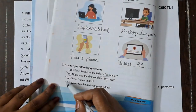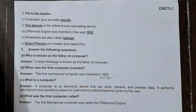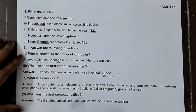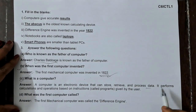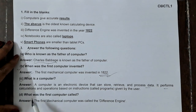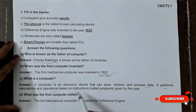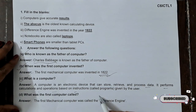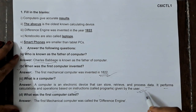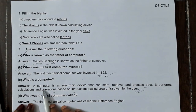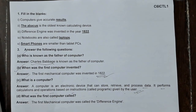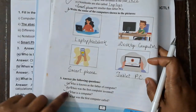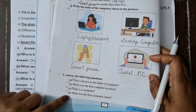Question: What is a computer? A computer is an electronic device that can store, retrieve, and process data. It performs calculations and operations based on instructions given by the user.